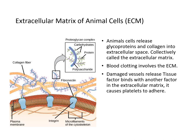Animal cells release glycoproteins and collagen into the extracellular space, collectively called the extracellular matrix (ECM). Blood clotting involves ECM proteins: damaged vessels release tissue factor that binds to another factor in the ECM, and platelets adhere to tissue factor, initiating clotting.